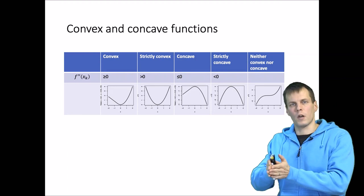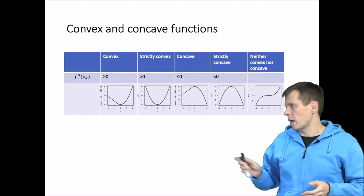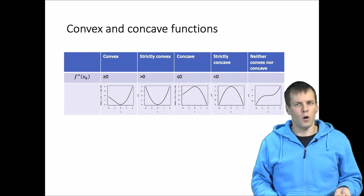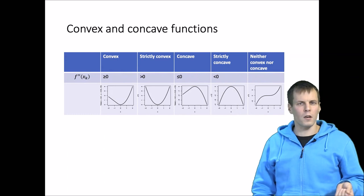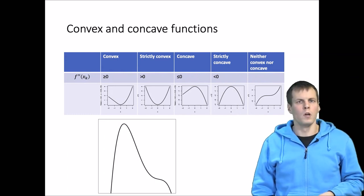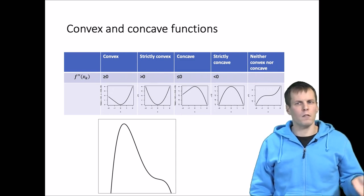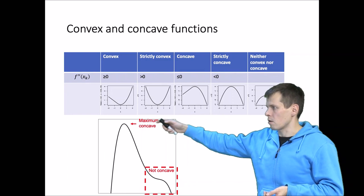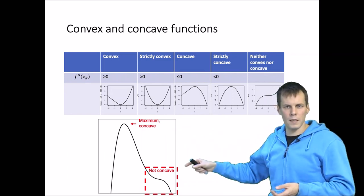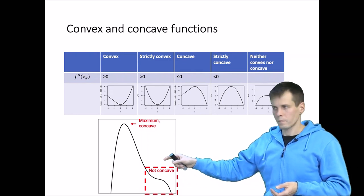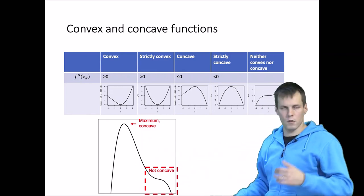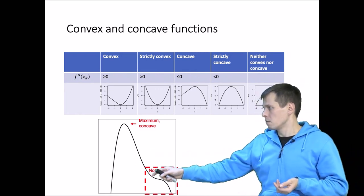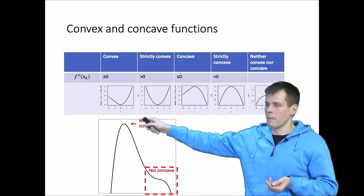Concave is the same except the line goes down, and strictly concave means we always curve right. If we turn right and then left, or left and then right, the function is neither convex nor concave. In a one-parameter estimation problem, the function may be neither concave nor convex overall, but it can be concave at the maximum — so that's not necessarily a problem.